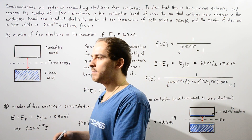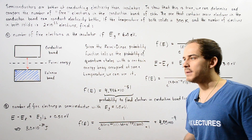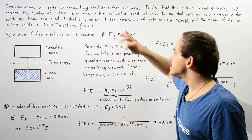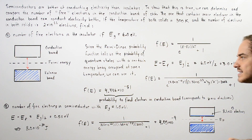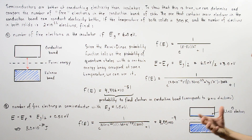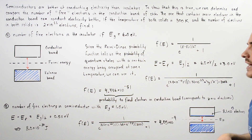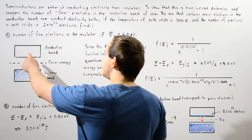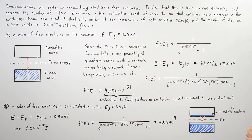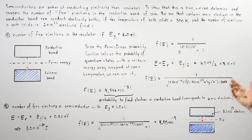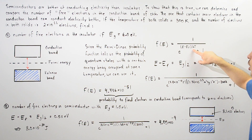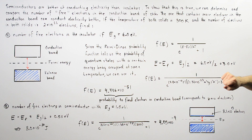We calculate this probability using the Fermi-Dirac probability function, which tells us the probability of quantum states with a certain energy being occupied at some temperature within our solid. We can use this to calculate the number of electrons in our conduction band. In the Fermi-Dirac function, K is the Boltzmann constant, T is the temperature in Kelvin, E_f is the Fermi energy, and E is the actual energy.